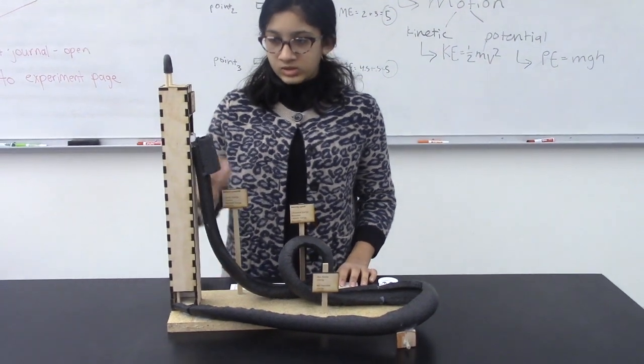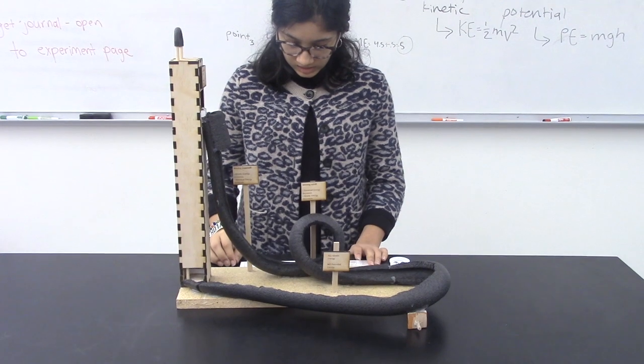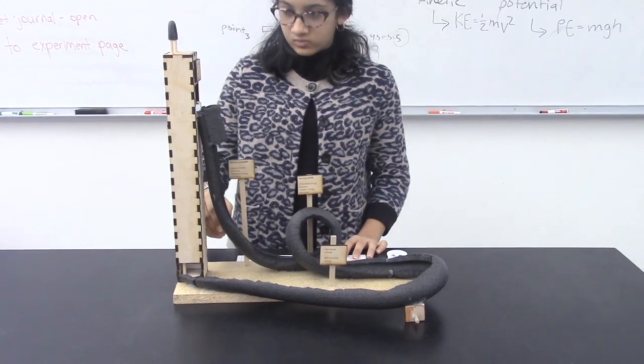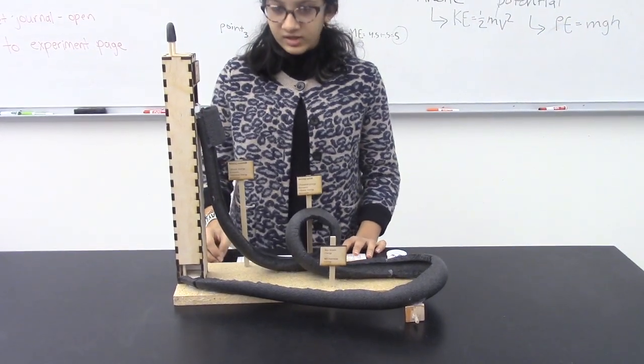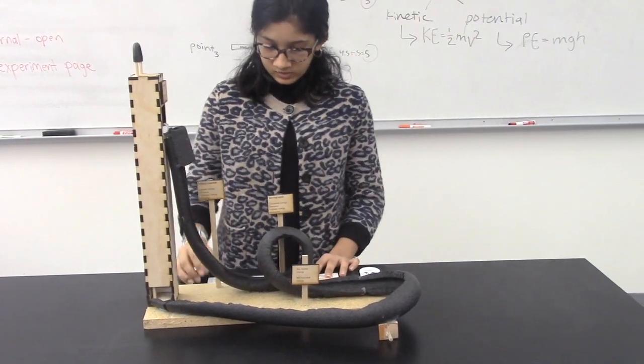We designed a roller coaster made out of foam tubing. The marble goes down the roller coaster and ends up in a shaft which catches it. The shaft has a platform which lifts the marble back up and dumps it into the foam tubing.